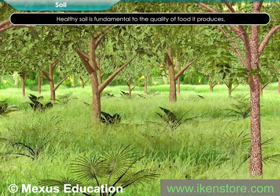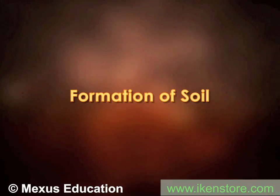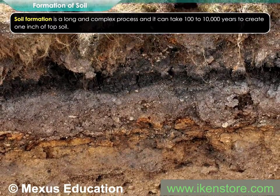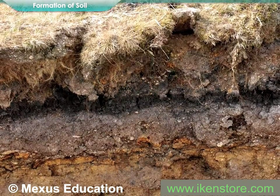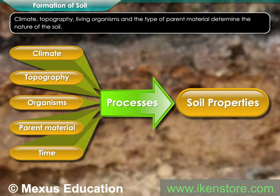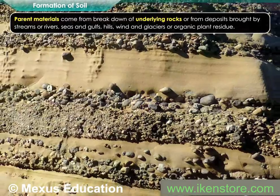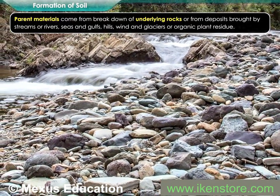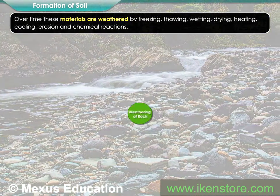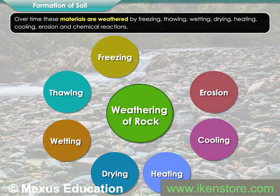Healthy soil is fundamental to the quality of food it produces. Soil formation is a long and complex process, and it can take hundreds to ten thousand years to create one inch of top soil. Climate, topography, living organisms, and the type of parent material determine the nature of the soil. Parent materials come from breakdown of underlying rocks, or from deposits from streams, rivers, seas, gulfs, hills, wind, and glaciers, or organic plant residue. Over time, these materials are weathered by freezing, thawing, wetting, drying, heating, cooling, erosion, and chemical reactions.